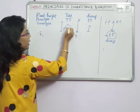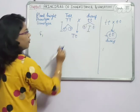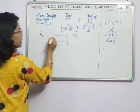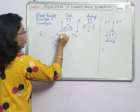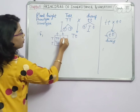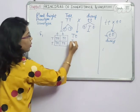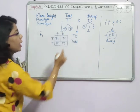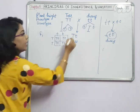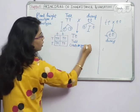Using the Punnett square: the pure tall parent produces gametes capital T and capital T, while the pure dwarf produces gametes small t and small t. The F1 offspring are all capital T, small t — heterozygote tall. The phenotype of the F1 generation is 100% tall, confirming that the dominant character is expressed and the recessive dwarf character is not.